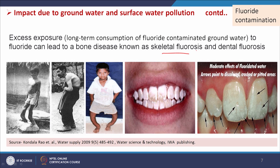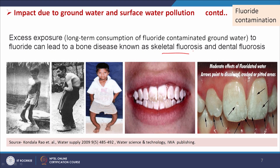Now we are going to see the impact of fluoride contamination as well. In the previous class, we have seen that large parts of the world have fluoride-contaminated ground water and different types of health impacts occur. Two important health impacts are skeletal fluorosis and dental fluorosis. This is because of excessive exposure to fluoride-contaminated water — that means long-term consumption of fluoride-contaminated ground water. These are bone diseases — you can see how severe these are.